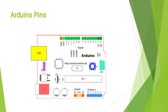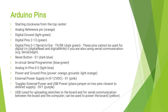This is the Arduino pin diagram. Starting clockwise from the top center: the analog reference pin is represented as orange color, digital ground is light green, and digital pins 2 to 13 are represented as green color. Digital pins 0 to 1, which are serial TX and RX, are dark green. These pins cannot be used for general digital input and output.